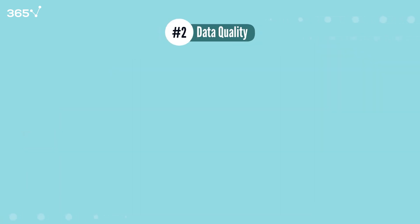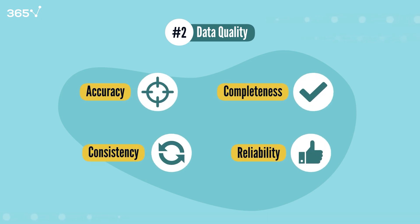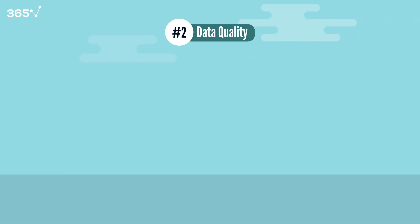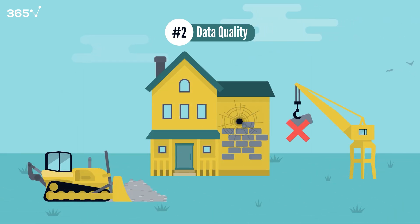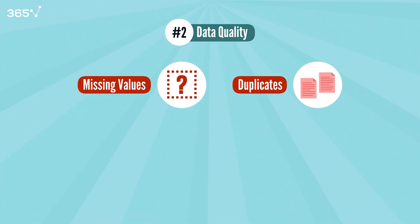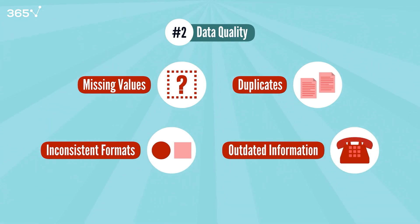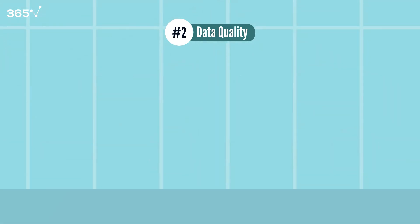Concept 2: Data Quality. Data quality refers to the condition of your data based on factors like accuracy, completeness, consistency, and reliability. When building a house, you wouldn't use damaged materials — similarly, poor quality data leads to unreliable results. Common issues include missing values, duplicates, inconsistent formats, and outdated information.